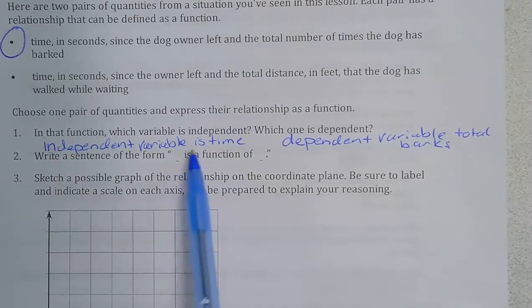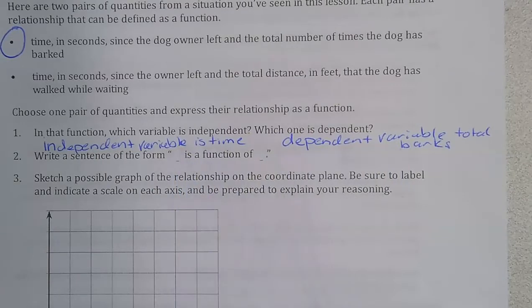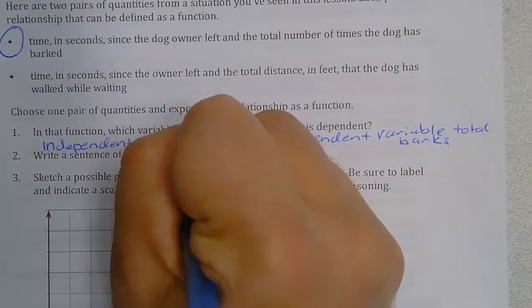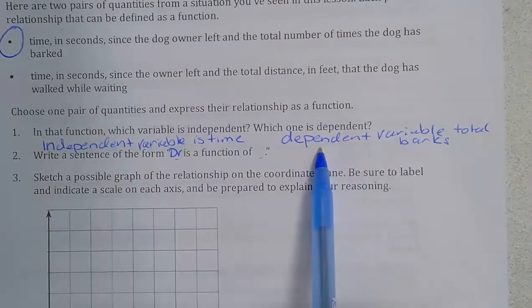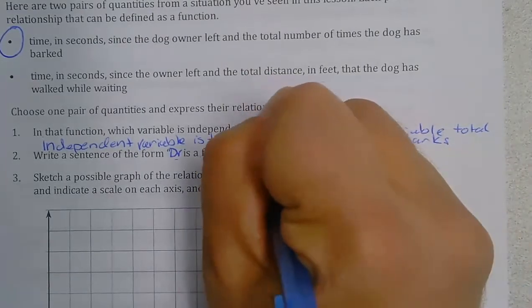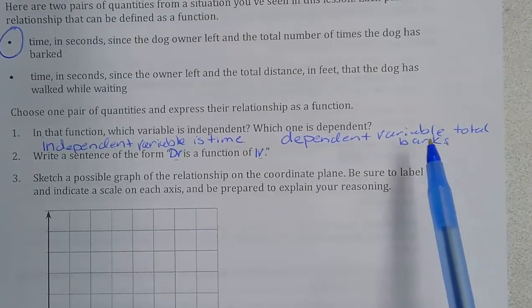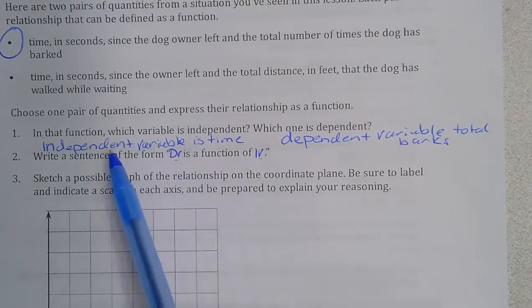So now to write this out blank is a function of blank. What you do here is you put the dependent variable because this would be your output of the function. It's a function of the independent variable. So what I mean by that is the total number of barks is a function of the time.